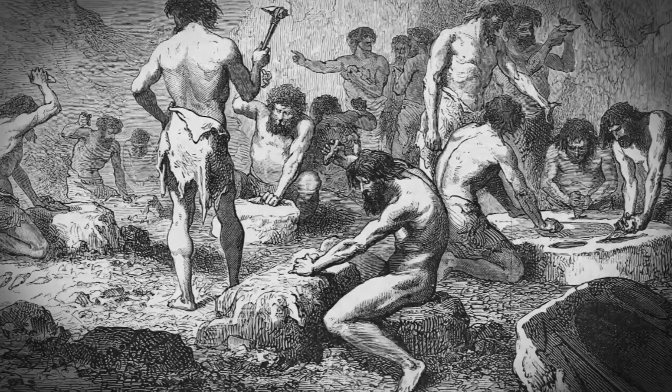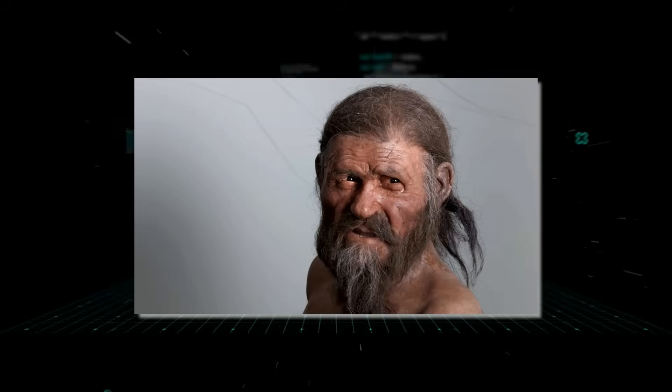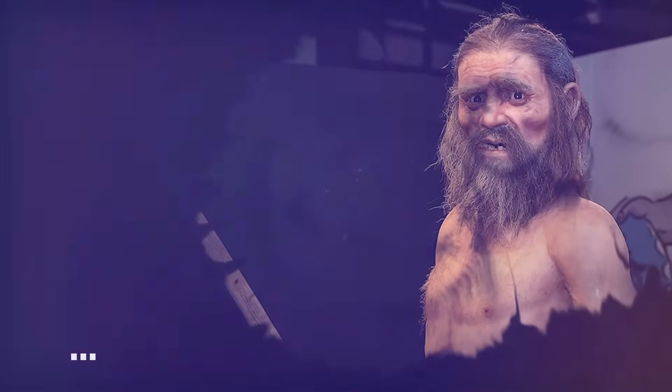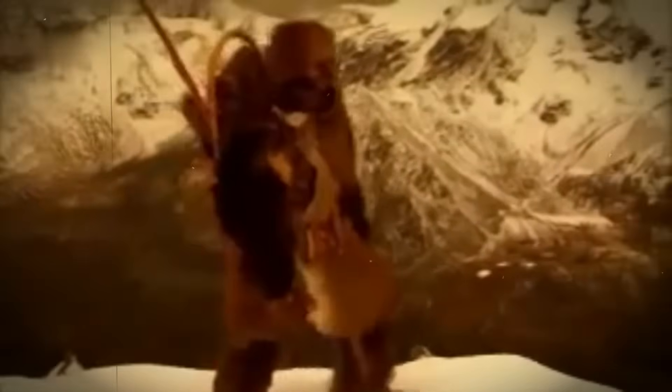Ötzi was more than just a mummy. He was a window into a lost world. Every single detail about him told a story. Forensic analysis showed he was about 45 years old when he passed, which was basically old age back then. He stood about 5 feet 3 inches tall and weighed roughly 110 pounds. While small by today's standards, his body was tough, built for a hard life in the mountains.